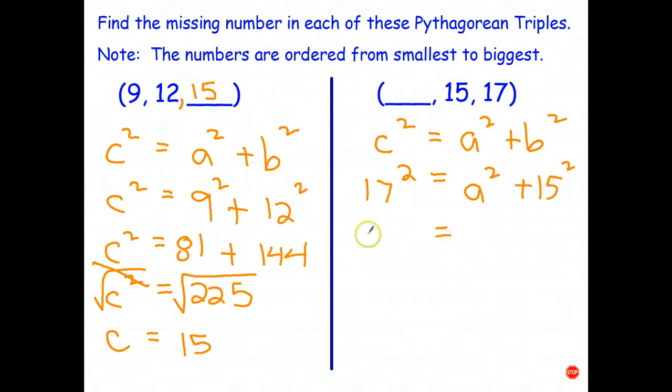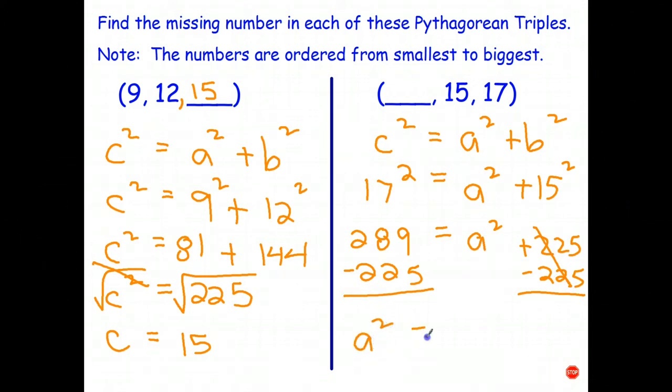Now, 17 squared is 289, I hope. a we don't know. And 15 squared is 225. Subtract off the 225 from both sides. I'll write the a² on the left. And we can say 28 take 22 is 60. 9 take 5 is 4. And if a² is 64, a has to be 8.